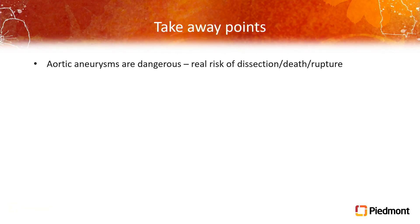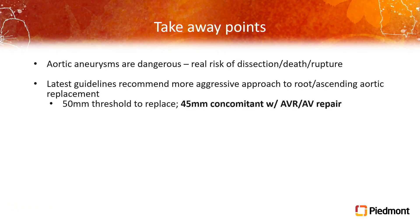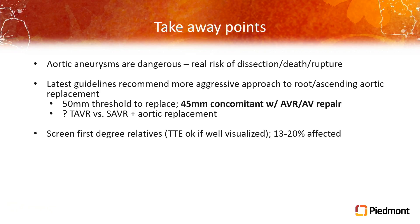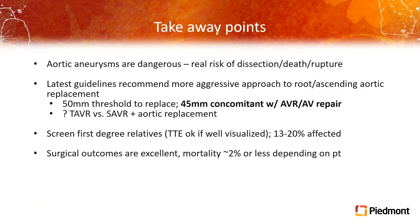Takeaway points: aortic aneurysms are real and dangerous, with real risk of death, dissection, and rupture. The latest guidelines recommend a more aggressive approach than has traditionally been advocated — the 50 millimeter standalone threshold and 45 millimeters concomitant with aortic valve replacement and repair, in appropriate surgical candidates with shared decision-making. In Athens, if we see a 65-year-old who wants a TAVR and has a 50 millimeter aorta, unless they're a prohibitive operative candidate, they're going to surgery and getting their aorta replaced with the valve. Don't forget screening of first-degree relatives — up to 20% of family members may be affected, and an echo is fine as long as it visualizes the root and part of the ascending. The surgical outcomes are excellent: mortality is 2% or less in elective patients, so don't be afraid to send someone to surgery to prevent a catastrophic problem down the road.